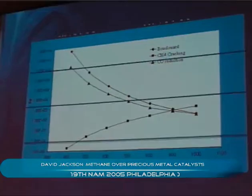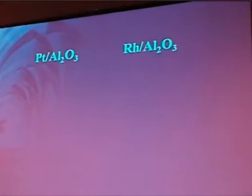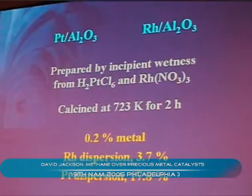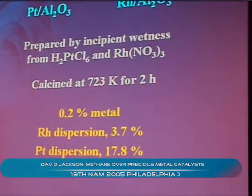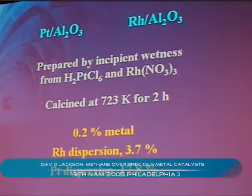We're going to look at two catalysts: platinum-alumina and rhodium-alumina, prepared by a standard method from either chloroplatinic acid or rhodium nitrate. These are calcined, using about 0.2% metal dispersions — just under 4% for the rhodium and nearly 18% for platinum.